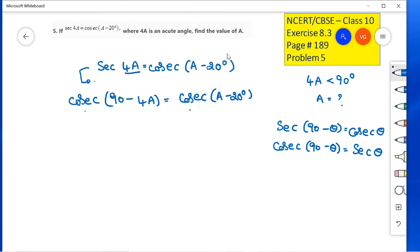As we have the same trigonometric ratio on both sides of the equation, the angles can be equated. So, 90 minus 4A equals A minus 20 degrees.